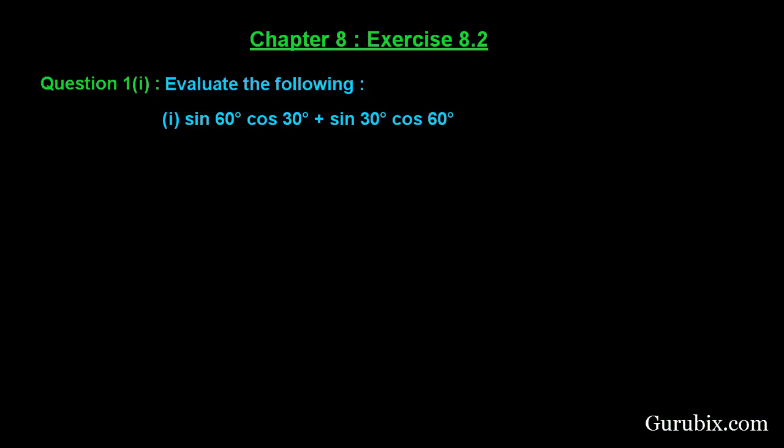The question says evaluate the following: sine 60 degree times cos 30 degree plus sine 30 times cos 60 degree, by using the trigonometric table. So let us see how to solve this question.